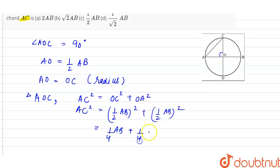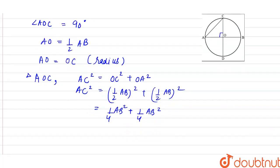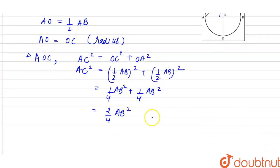...plus ¼AB². So it will be equal to 2/4 AB², which is equal to ½AB². So we can say from here that AC² is equal to AB² divided by 2.